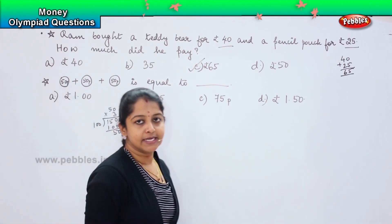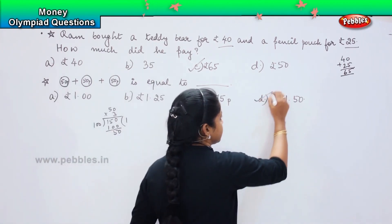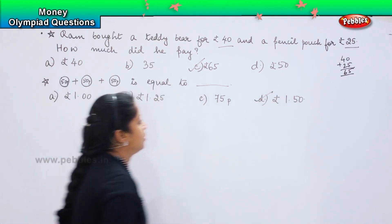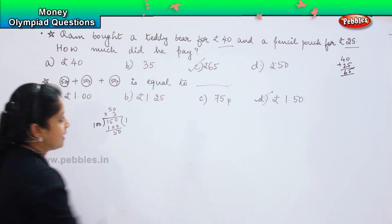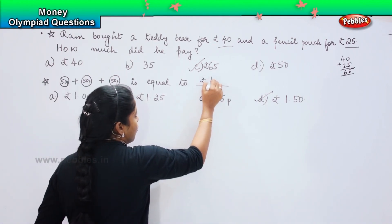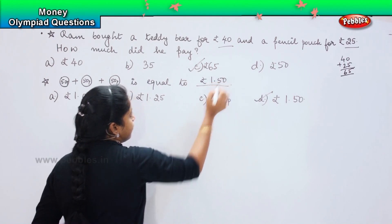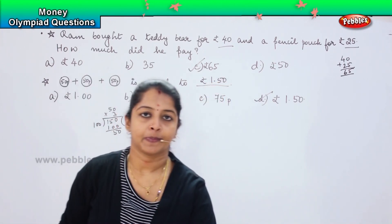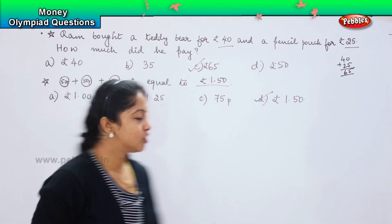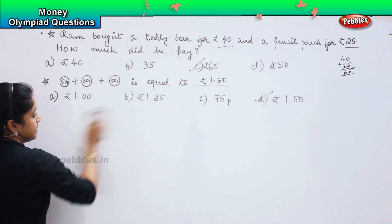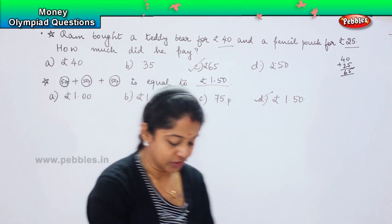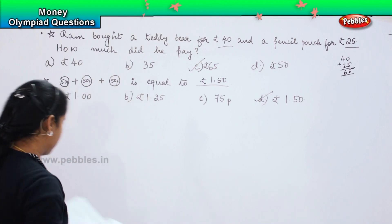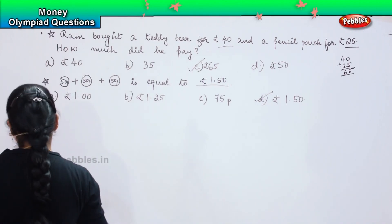Where can you see that? Yes, it is Option D. So the value of 3 fifty-paise coins is equal to 1 rupee and 50 paise. Is it clear, children? Did you understand this? Coming to the next question.